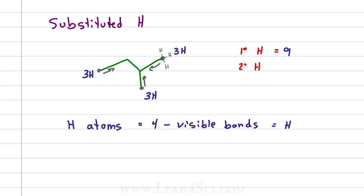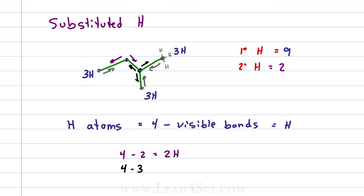For secondary hydrogens, we're looking for secondary carbons which, when you put the pencil down, have two lines coming out — and we have just one. Four possible bonds minus the two visible to carbon equals two hydrogen atoms on a secondary carbon, and we have one secondary carbon, which gives us two secondary hydrogens. For tertiary hydrogen, we're looking for a tertiary carbon — three lines coming out of the pencil tip — and we have one. Four bonds minus three bonds to carbon is one remaining for hydrogen, giving us one tertiary carbon with one hydrogen atom, for a total of one tertiary hydrogen.